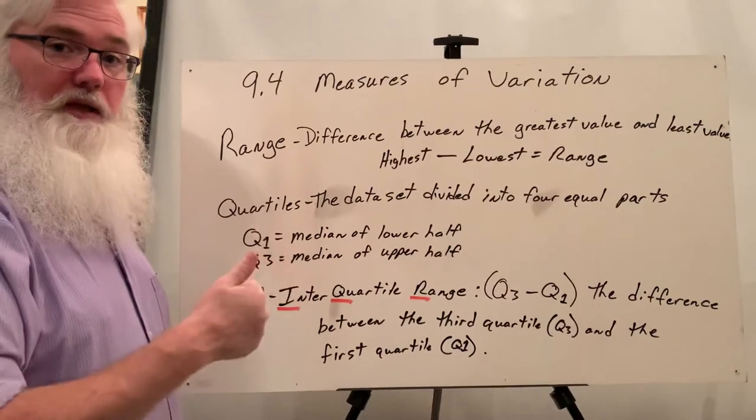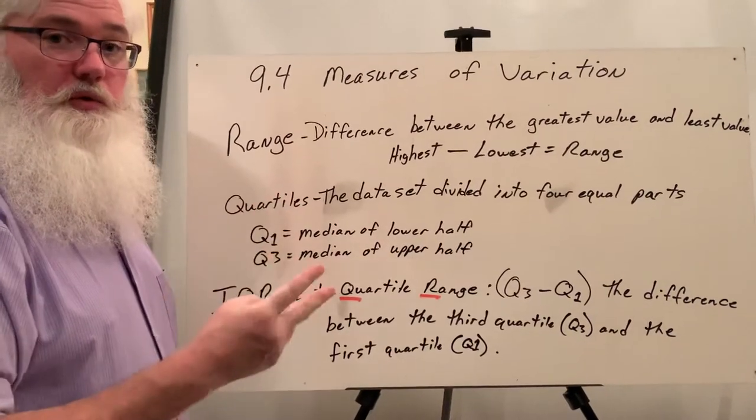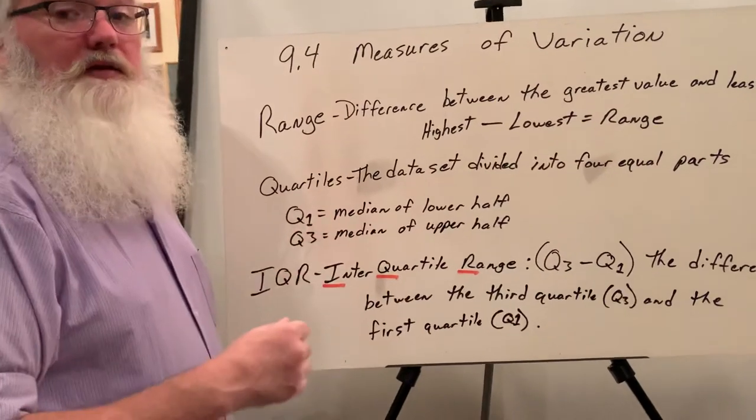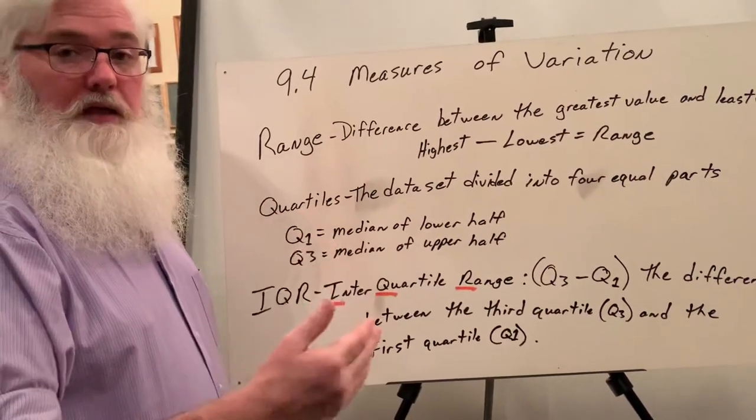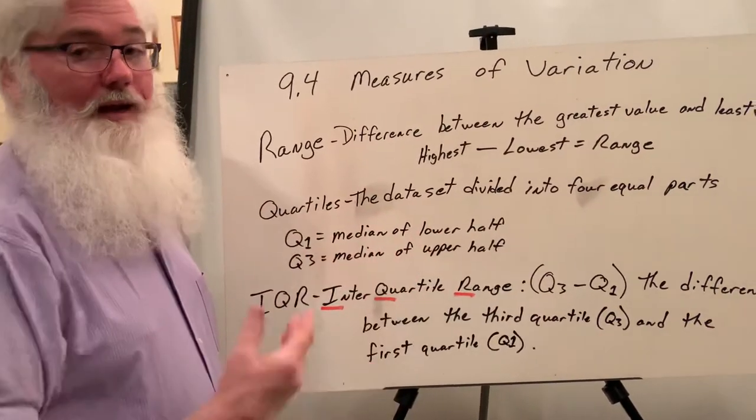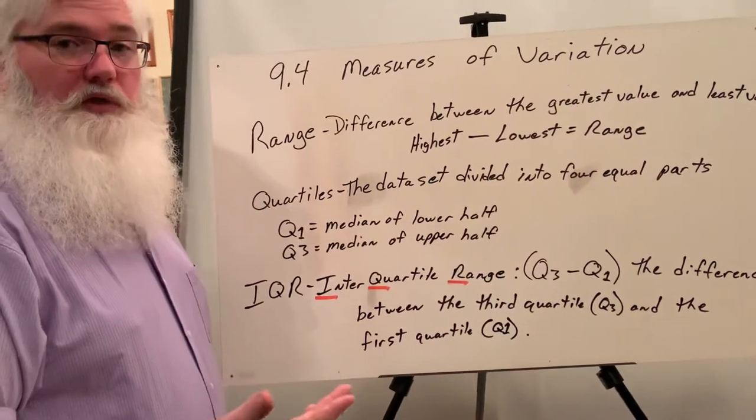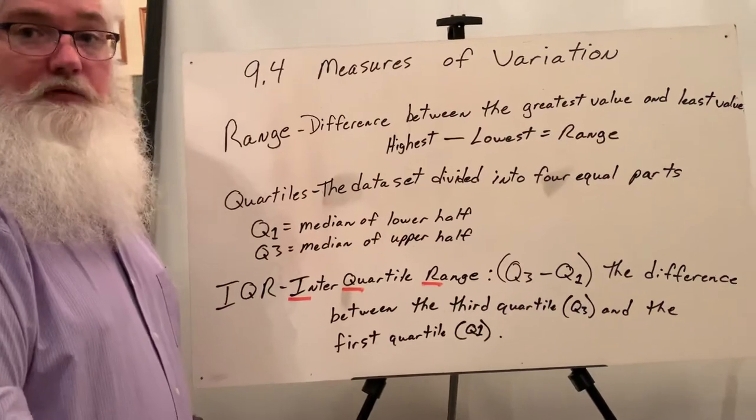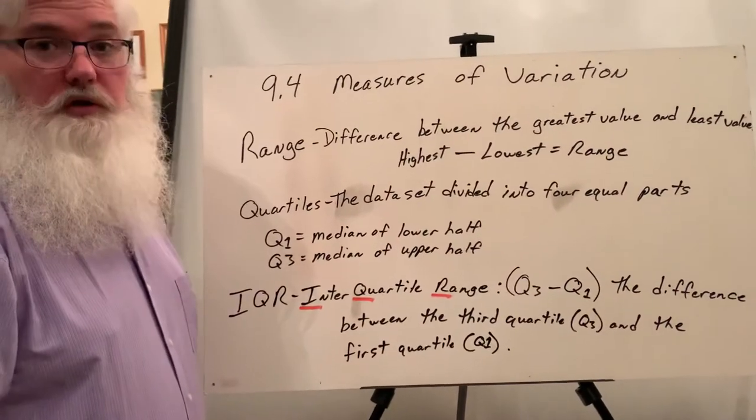Q1 is the median of the lower half. Q2 is the median of the whole data set. Q3 is the median of the upper half, and actually Q4, which we don't really refer to it, is the greatest value. That's how it separates the four quartiles or four quarters of the data.